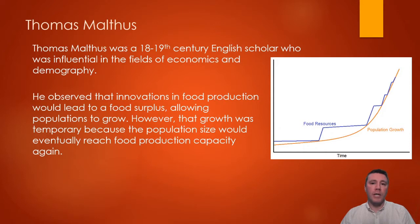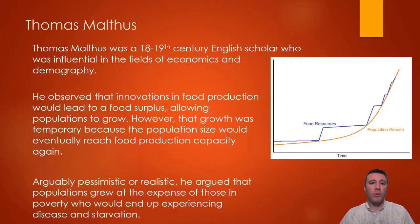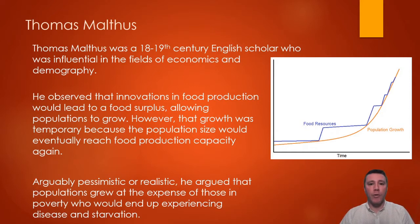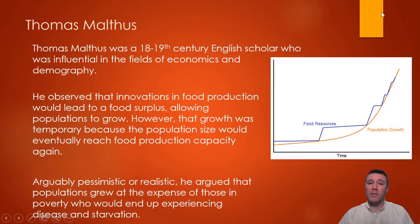Unfortunately, population growth would outpace agricultural production, even with new technological advancements. According to the idea of the Malthusian catastrophe, famine and war would result as the primary mechanisms for limiting human population growth. Either pessimistic or realistic, depending on your perspective, Malthus argued that populations would grow at the expense of those less fortunate, who would be subjected to disease outbreaks and starvation.